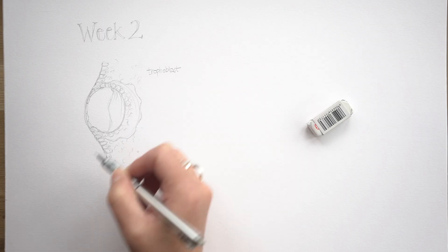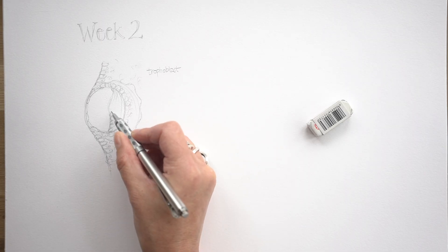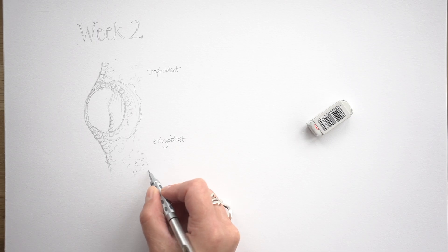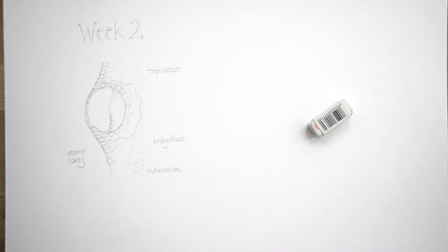And it's already developed a couple of separate layers. There's a mass of cells around the outside, which is sometimes called the outer cell mass, and that's the trophoblast. And then an inner mass of cells, which is called the embryoblast. And I've also labelled up the endometrium, the lining of the womb, and then the uterine cavity itself as well.